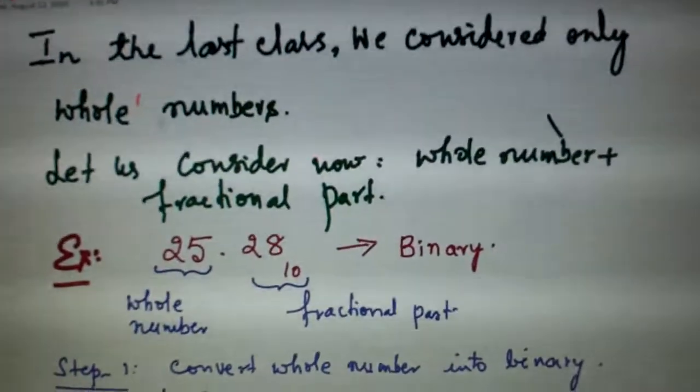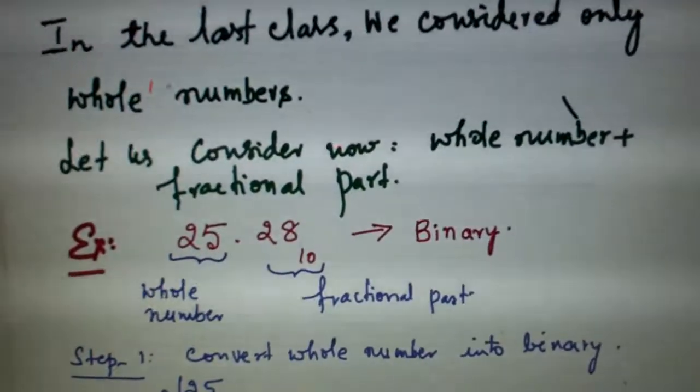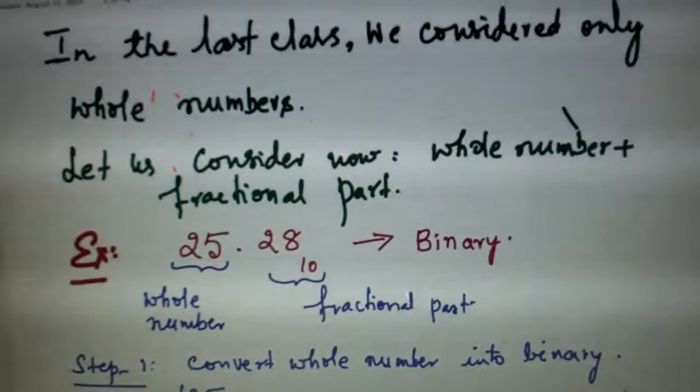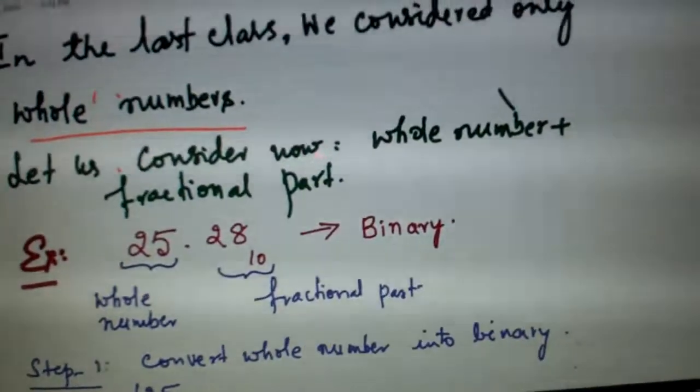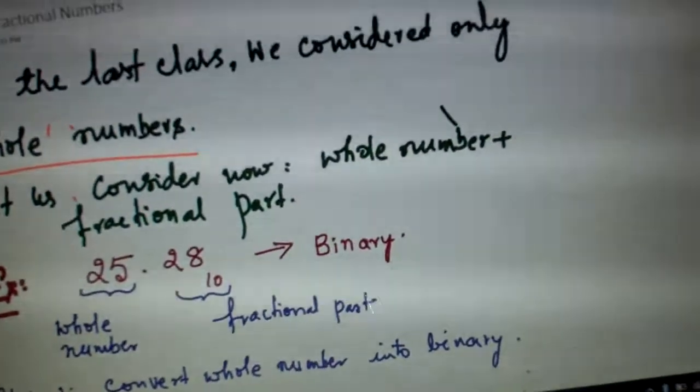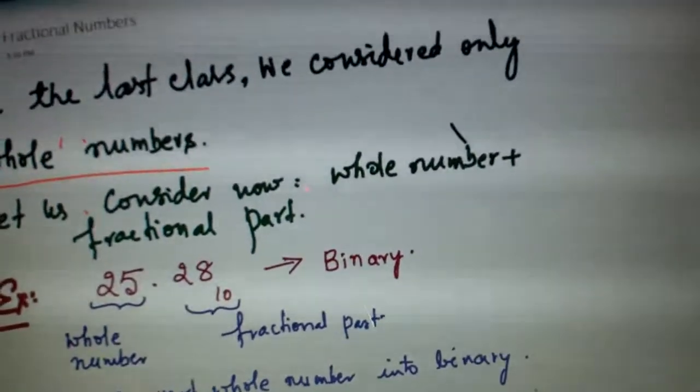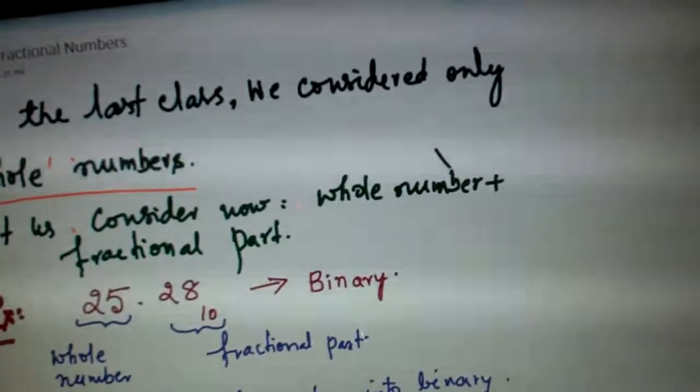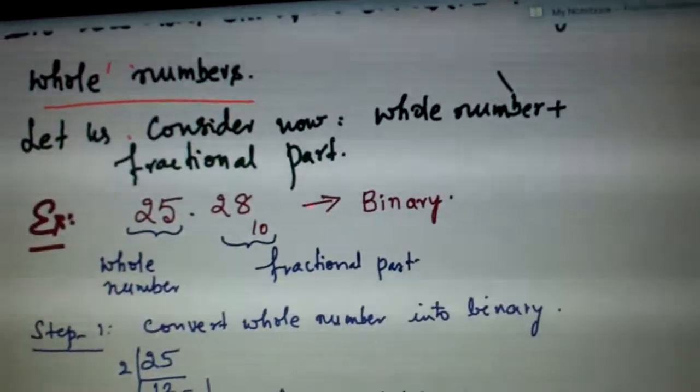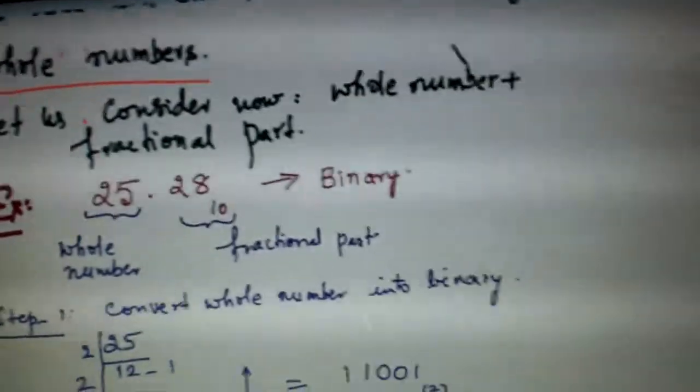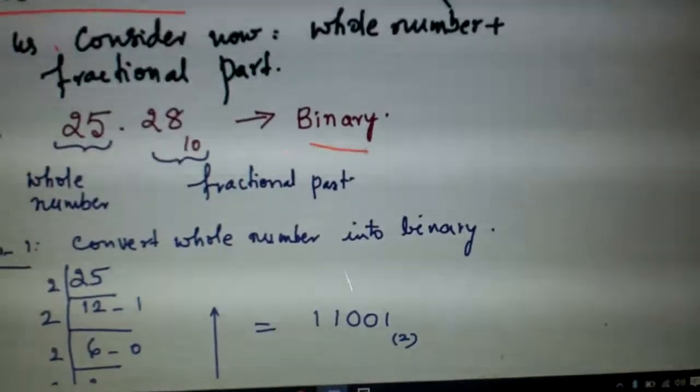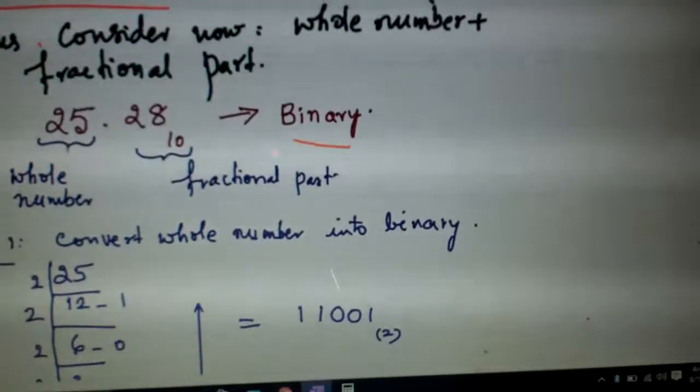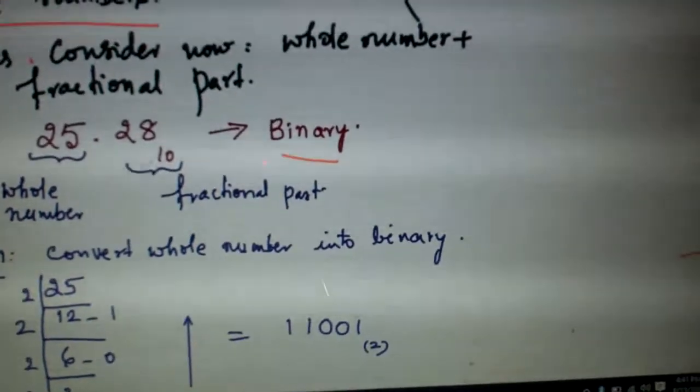We discussed considering whole numbers in the last class. Now let's see how we convert whole numbers and fractional numbers in this class. For that, let me take this example of 25.28 and convert it into binary. So this becomes the whole number and this is the fractional number.